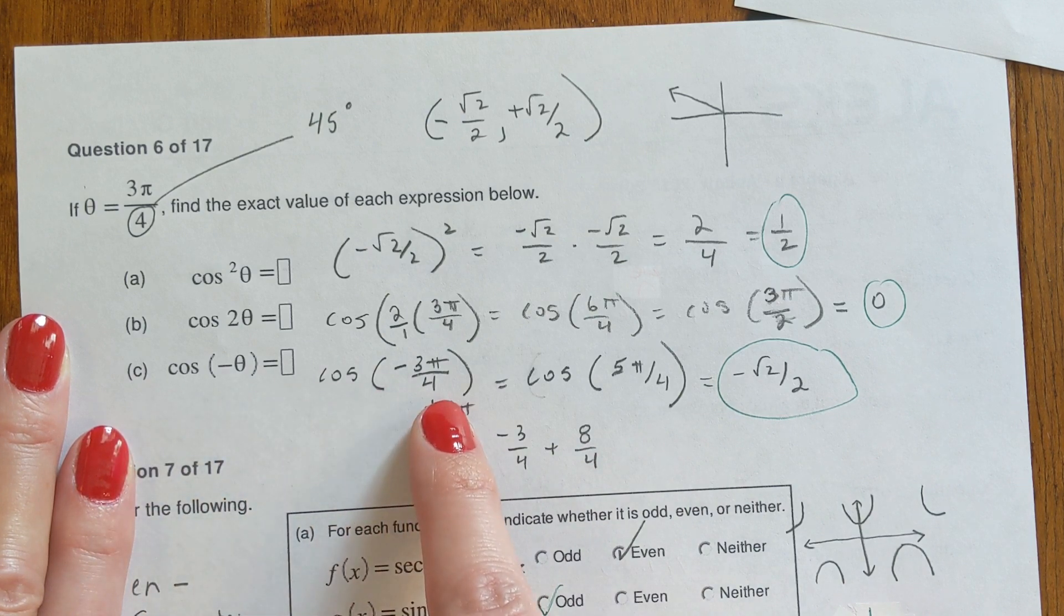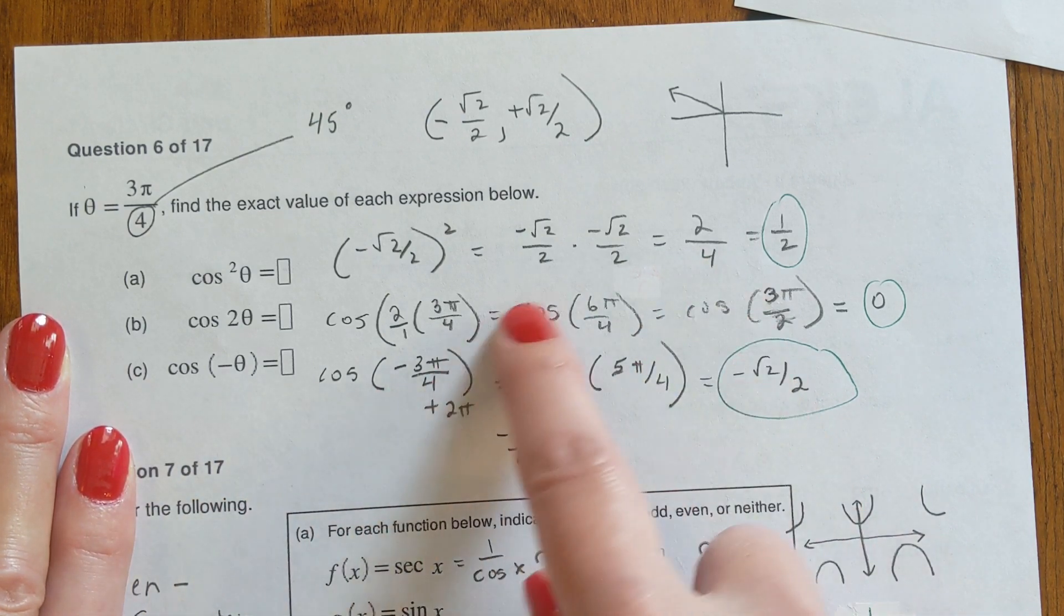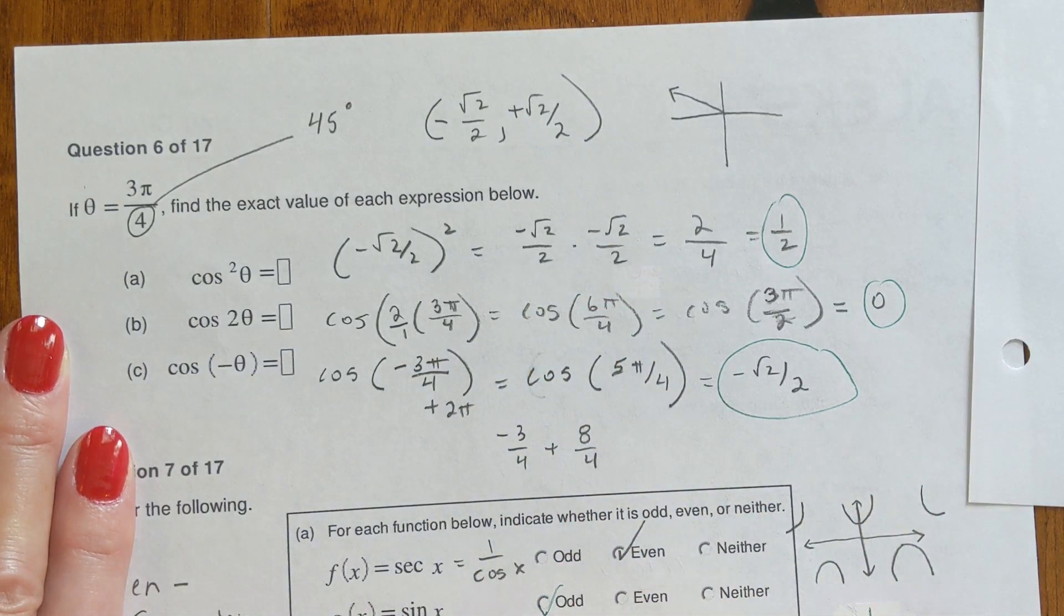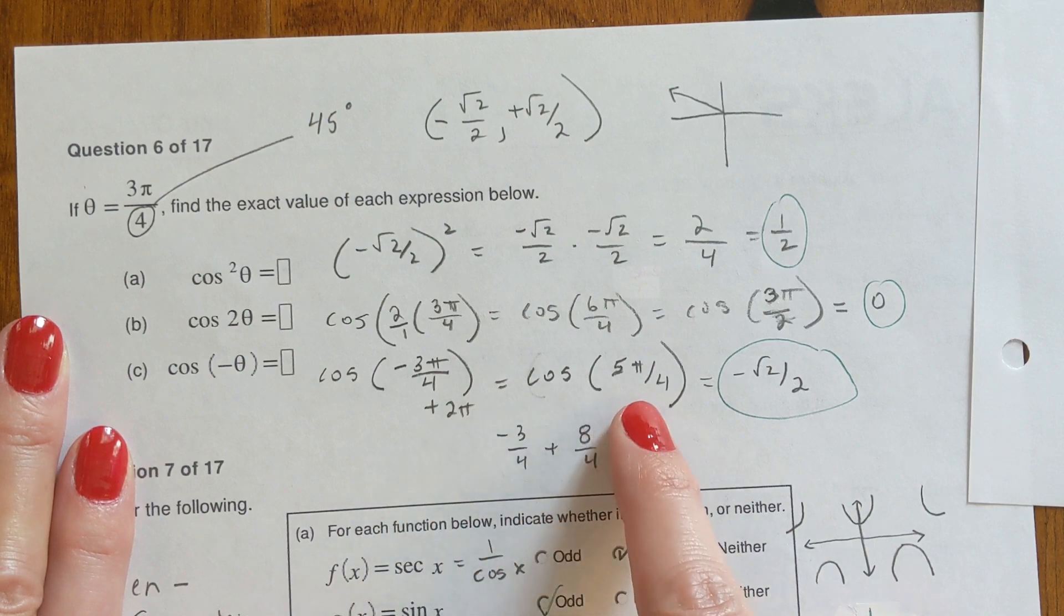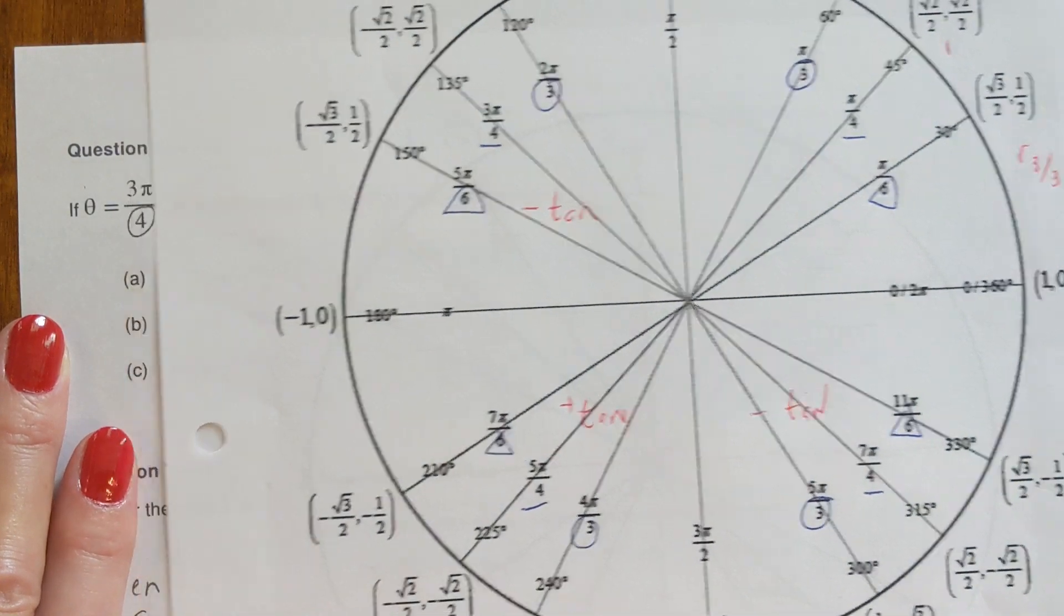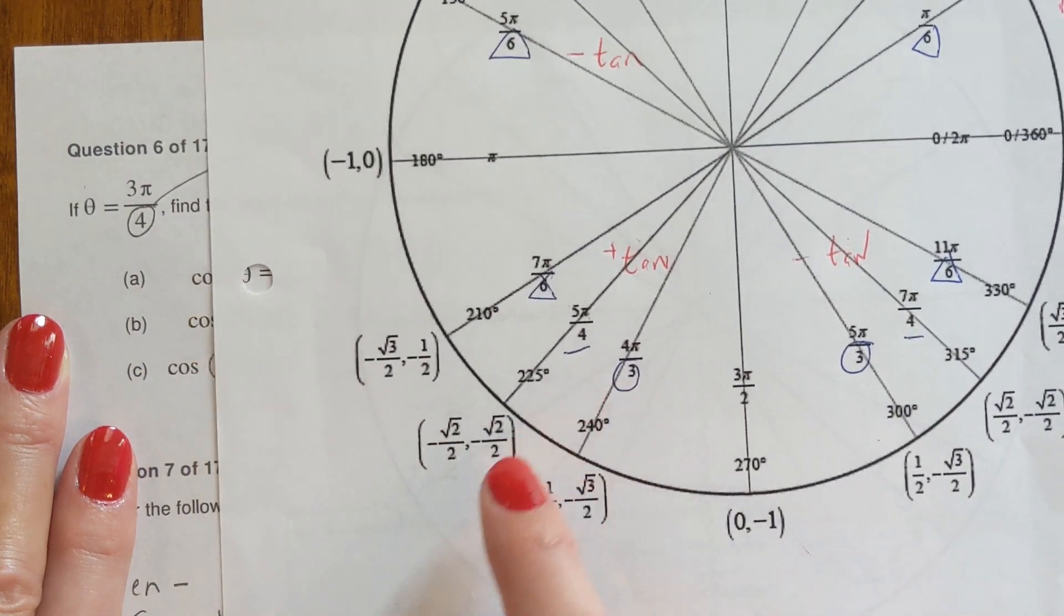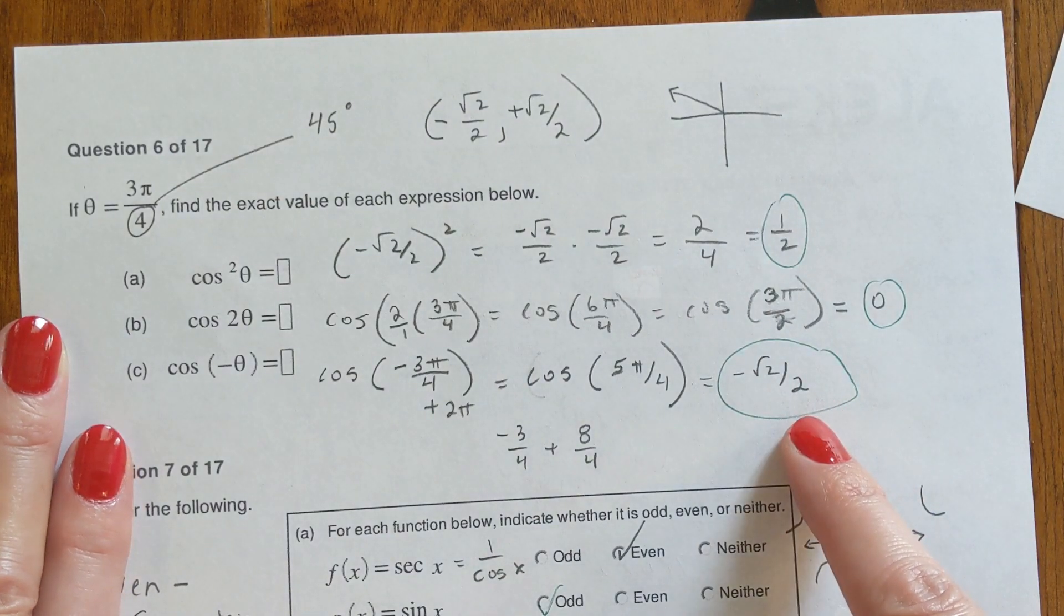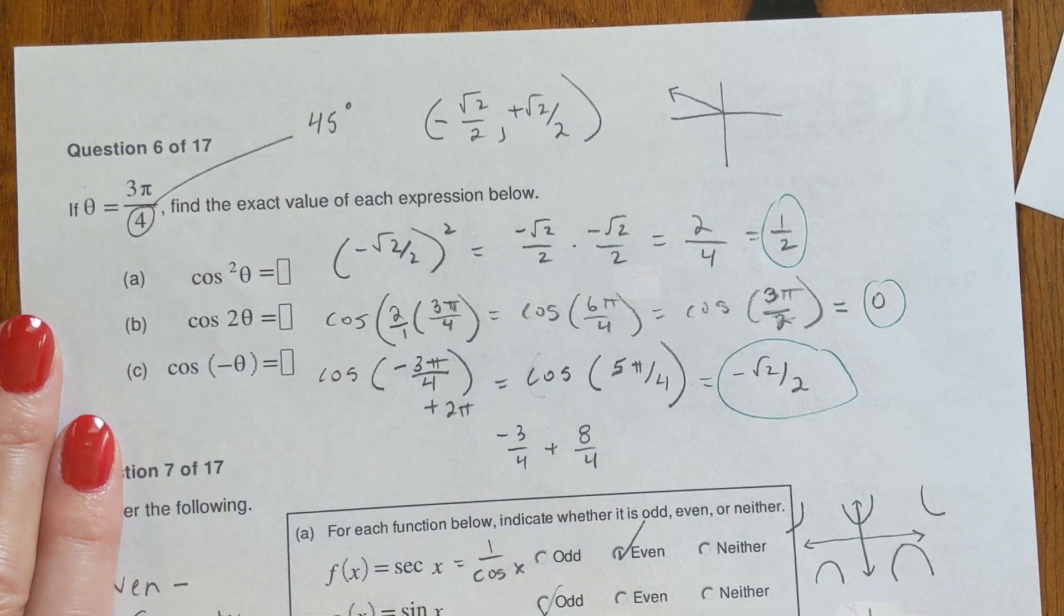The cosine of that is zero. And then the cosine of negative theta, so negative three pi over four takes you all the way around up to the top of the circle. Or if you want to, I added two pi which gives you five pi over four. Look in here on your picture - five pi over four is 225 and it's negative and negative in that quadrant, so the answer is negative radical two over two.